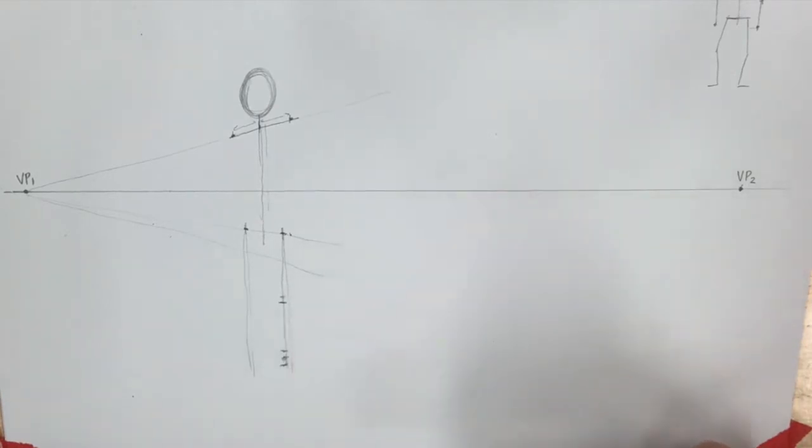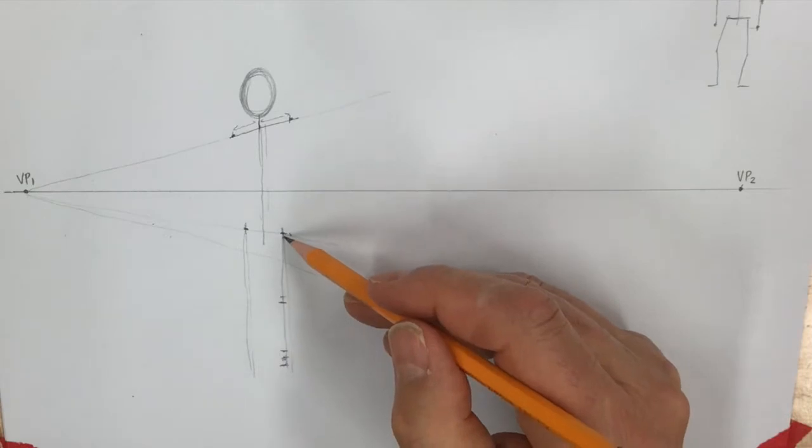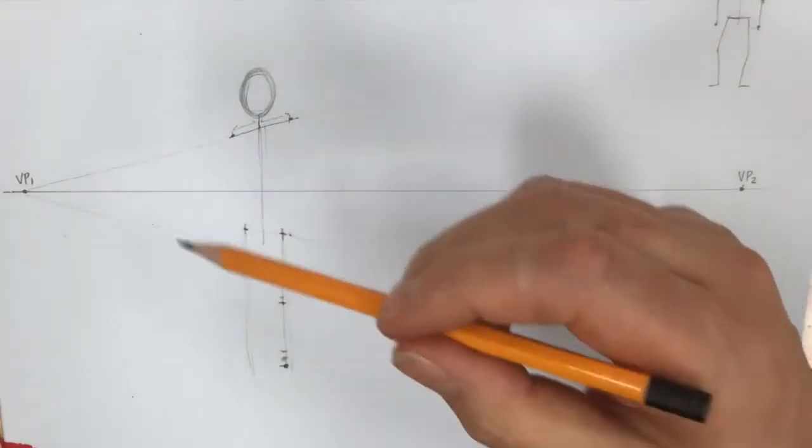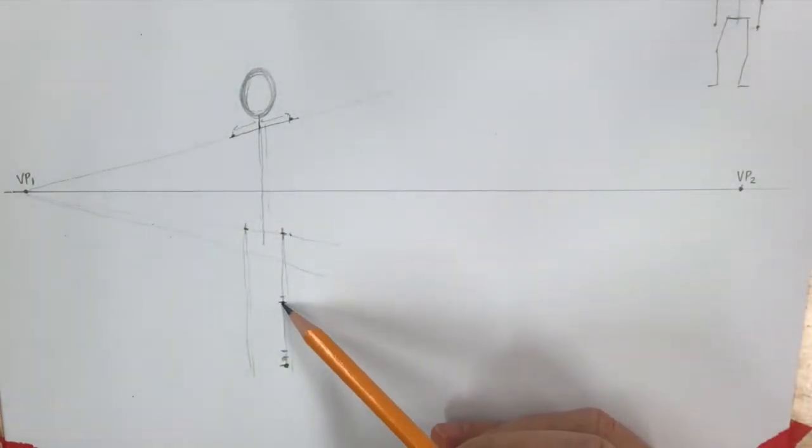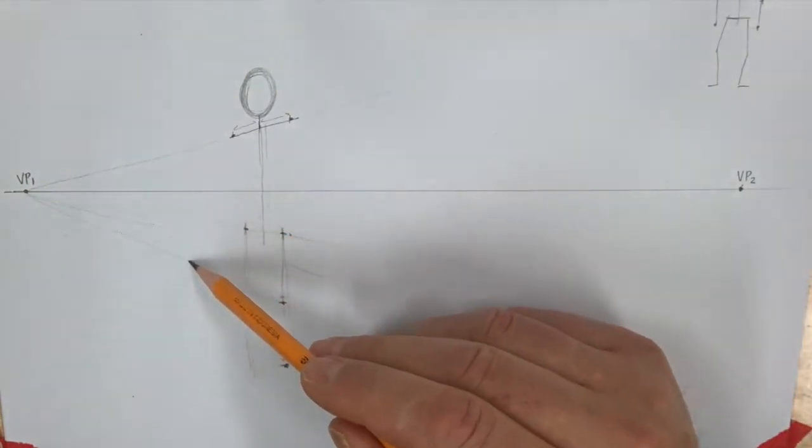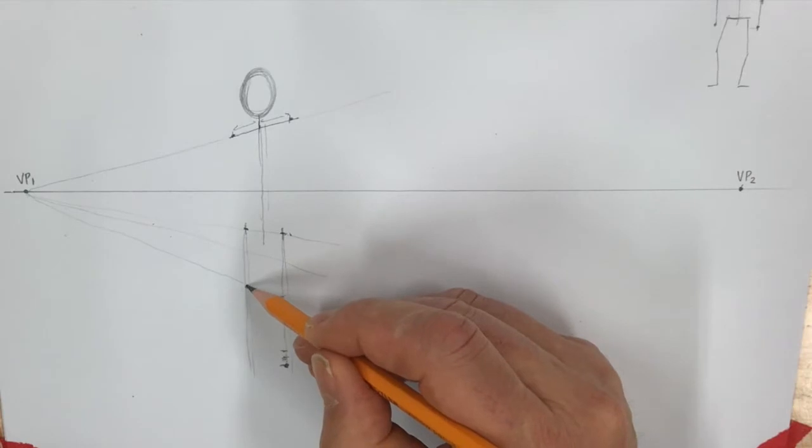Now if this is my ankle point and this is my knee point right on the leg in front of me, then I'm going to draw a line from that knee point to my vanishing point, or from the vanishing point to the knee as straight as I can.